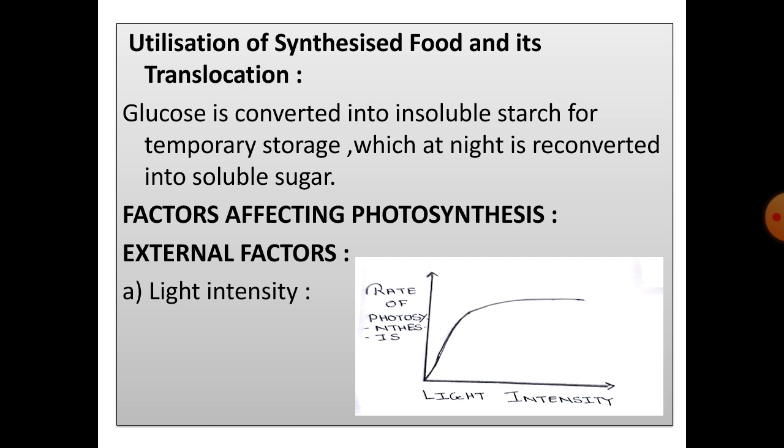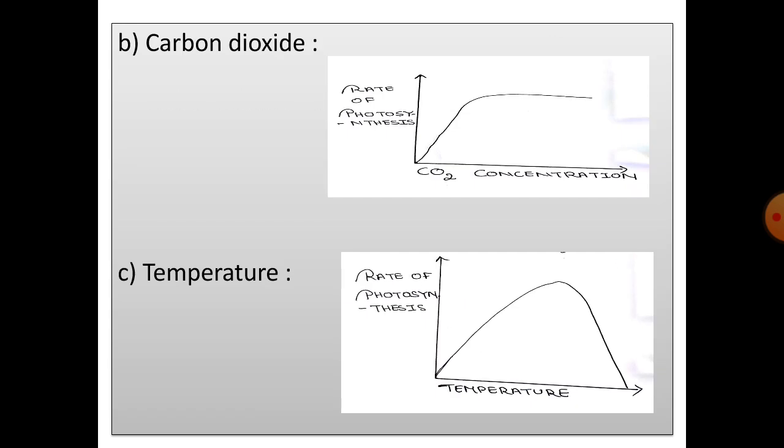Factors affecting photosynthesis. There are some external and internal factors which affect the process of photosynthesis. First is the light intensity. You can see in this graph, the rate of photosynthesis will increase with light intensity. Carbon dioxide. Rate of photosynthesis also increases with carbon dioxide concentration.